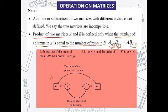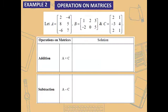Matrix A has order m×n and matrix B has order n×p. Notice that n is the same — the column of your first matrix equals the row of the second matrix — and the product will be of order m×p. To understand better, let's try one example.